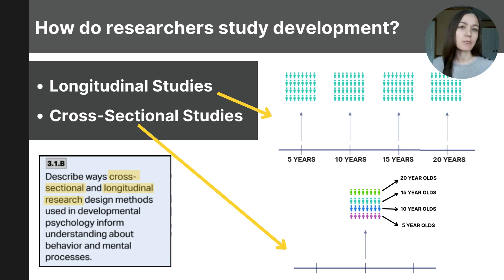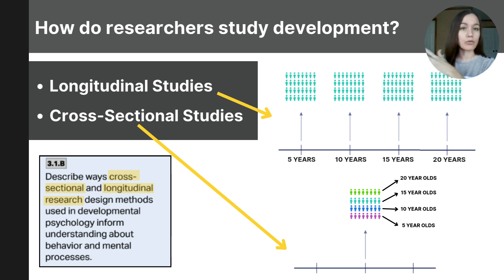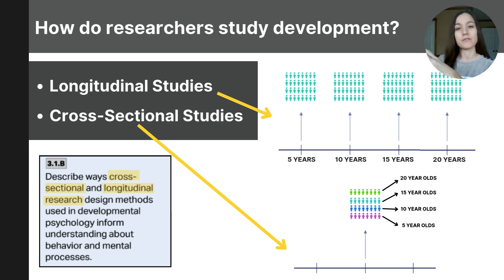Since developmental psychologists are studying behaviors and mental processes over time across ages, they will often use one of two methods of research study: either longitudinal studies or cross-sectional studies. Both of these methods allow researchers to observe variables across different stages or ages of our lifespan. A longitudinal study follows the same group of people over a long period of time. For example, if a researcher wants to better understand the major changes that happen in children with autism and how they face these challenges from childhood through adolescent years, they could gather a sample and then follow up with them every five years, documenting cognitive, emotional, physical, and social changes over the course of their childhood and adolescent years.